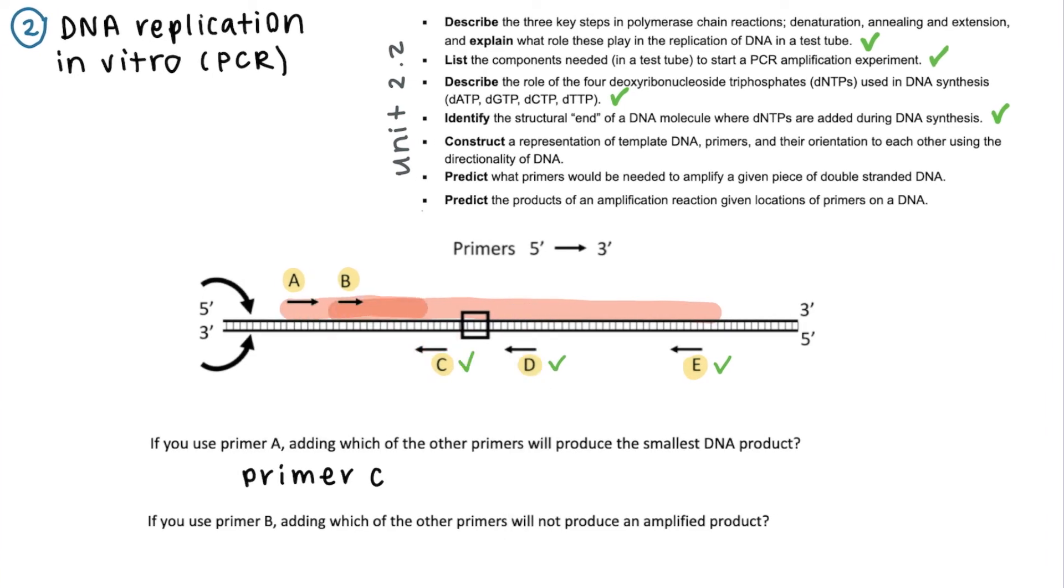All of the primers opposite to it can yield a viable product since they are on the opposite strand, but primer A, for example, since it's on the same strand as B, will not yield a viable product.